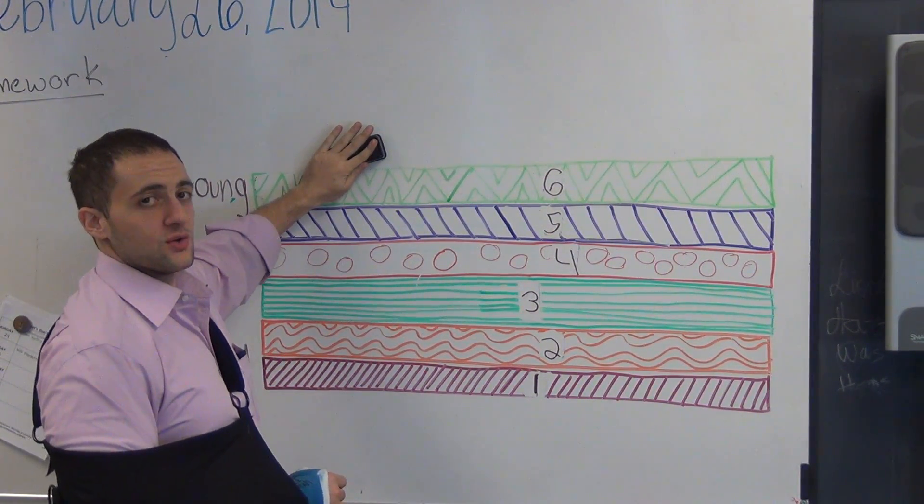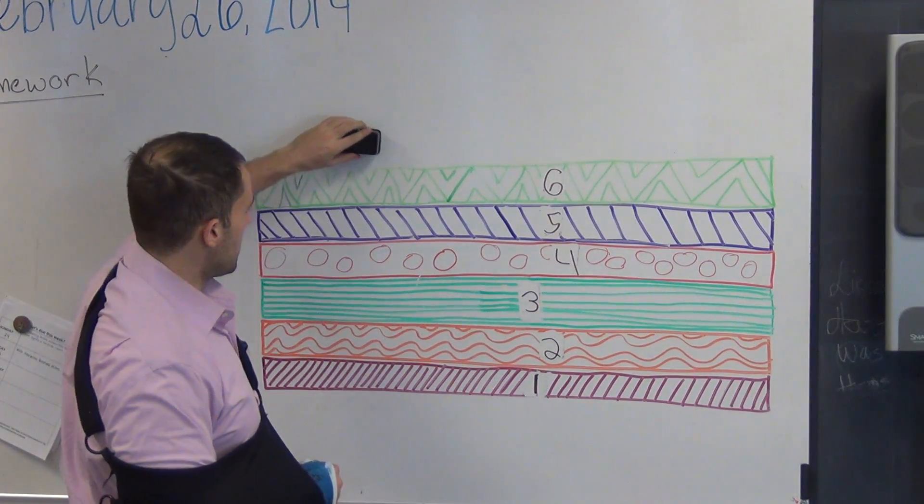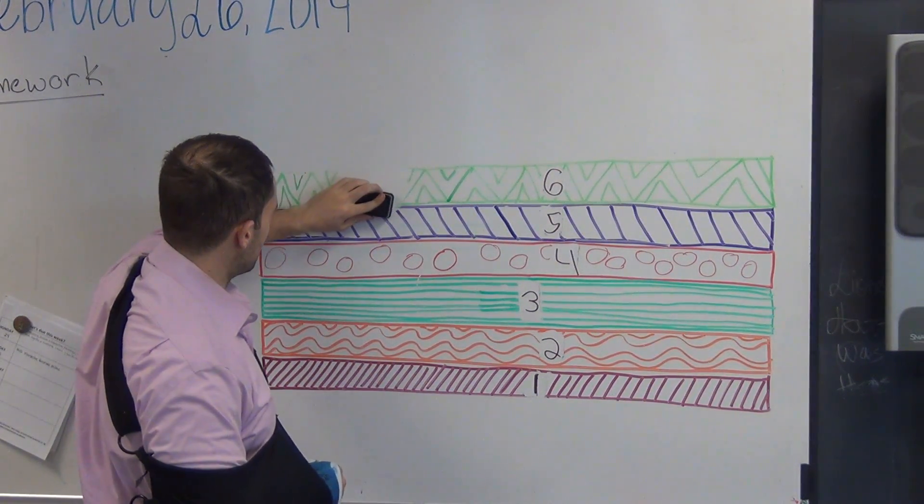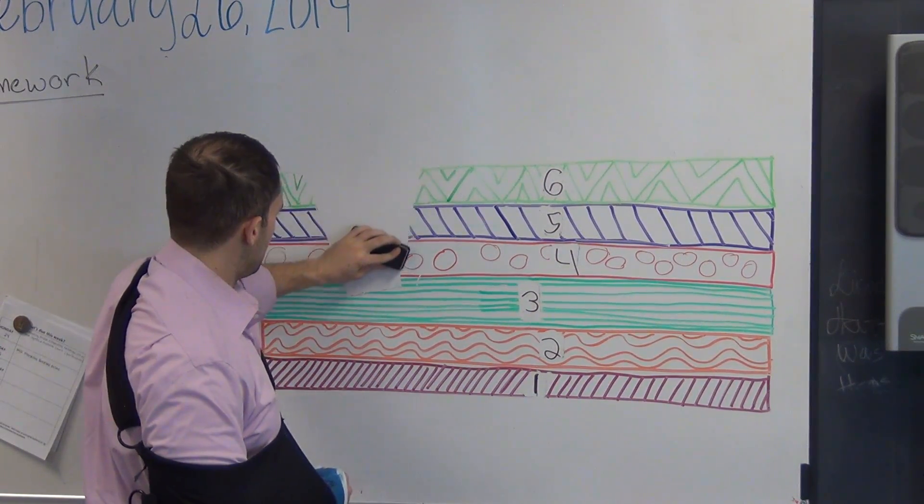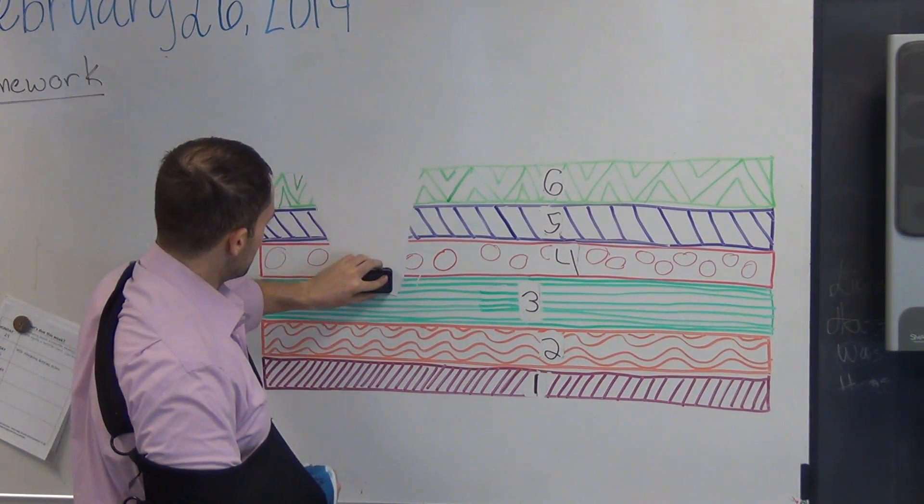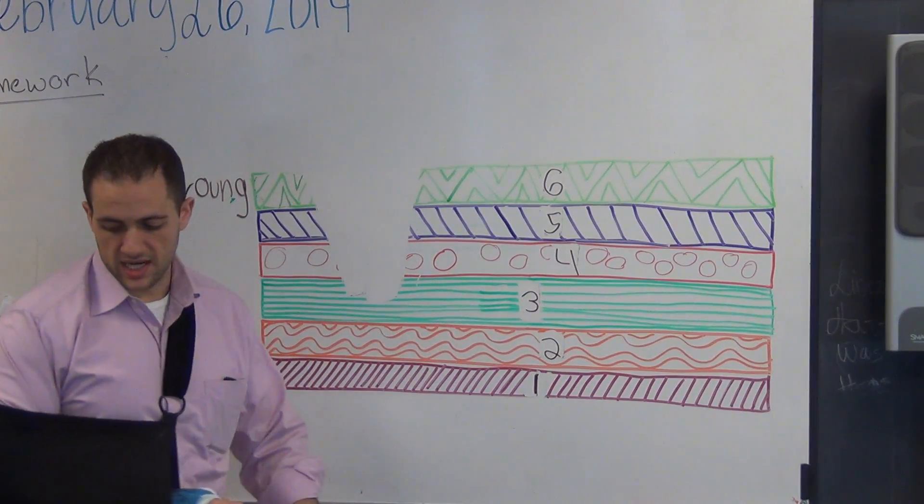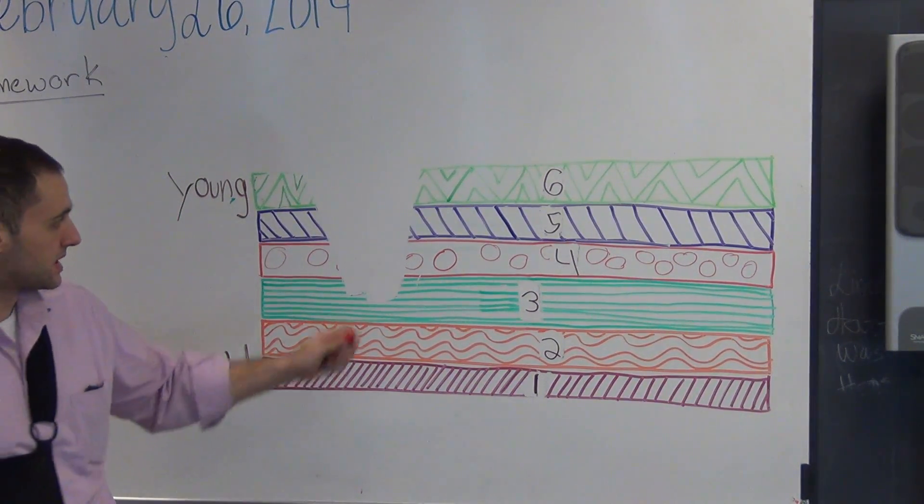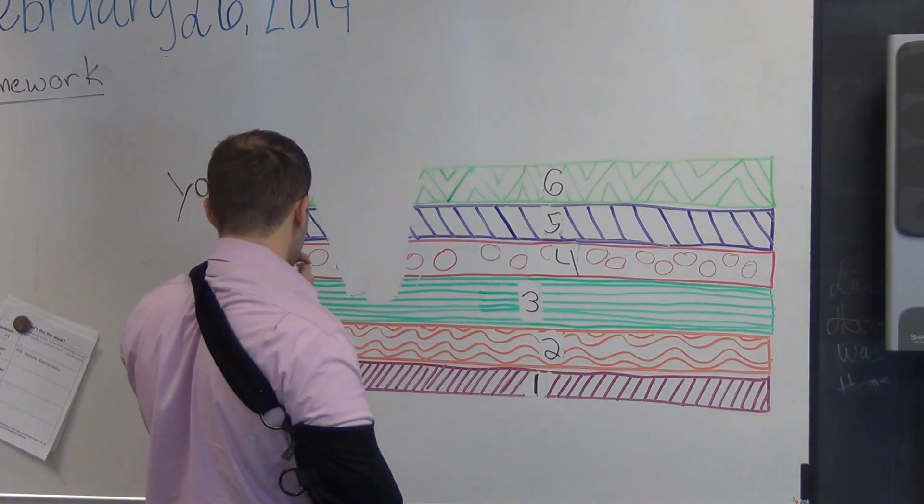We just finished our unit in weathering, erosion, deposition. Well, we know that erosion is going to remove some of the layers of rock. And scientists use this because it exposes things to look at.